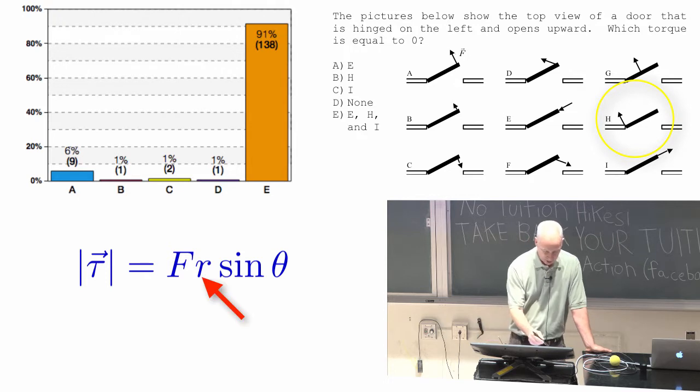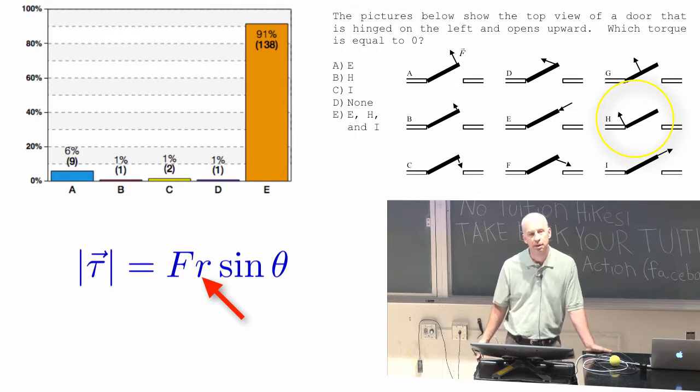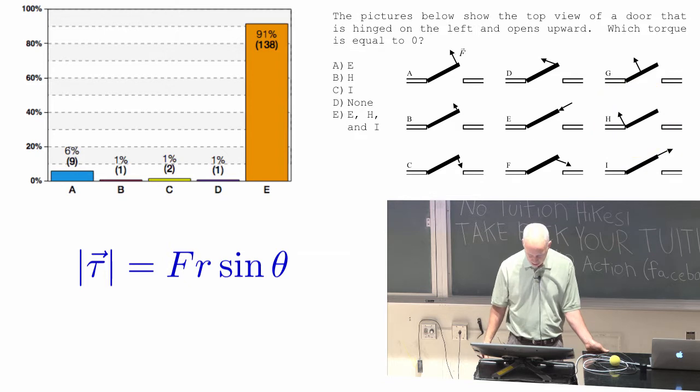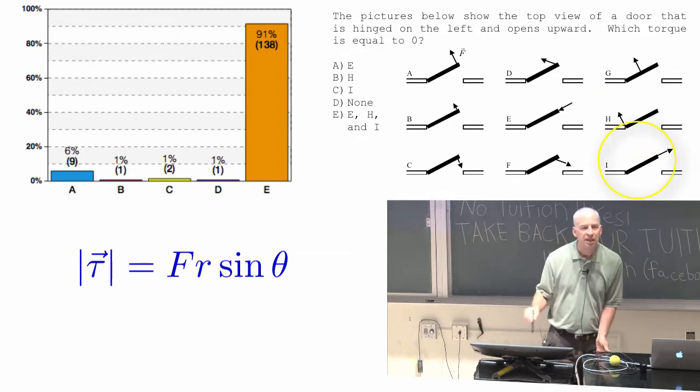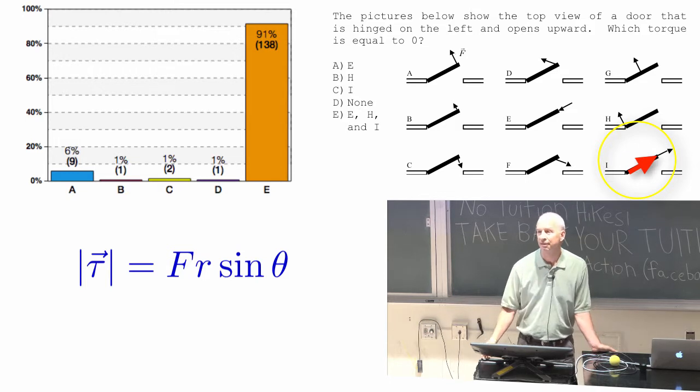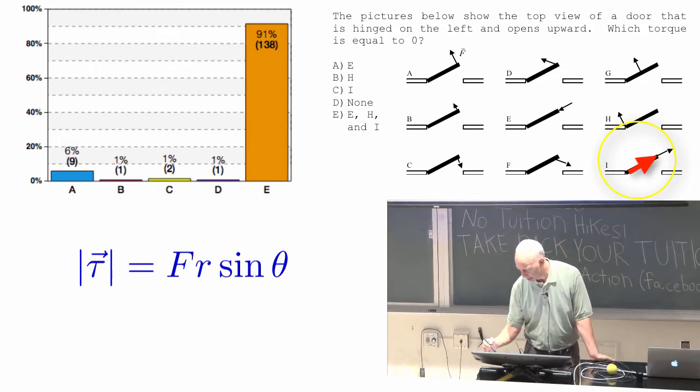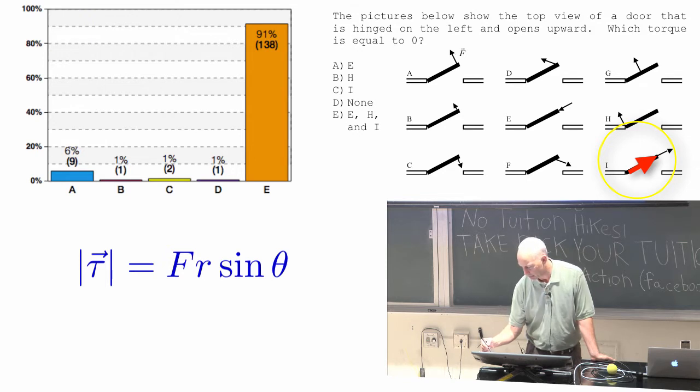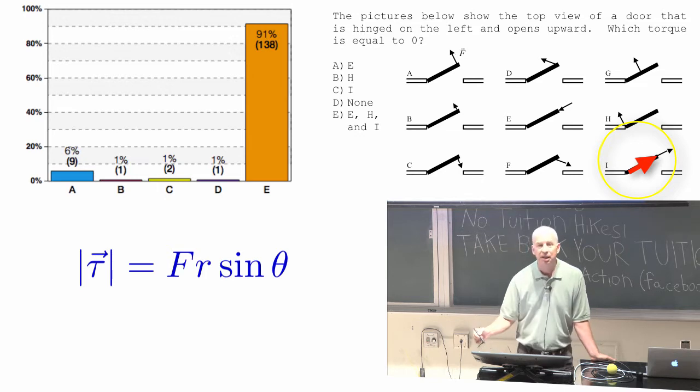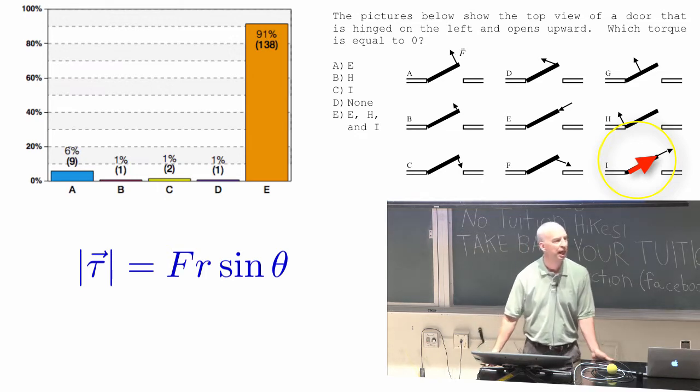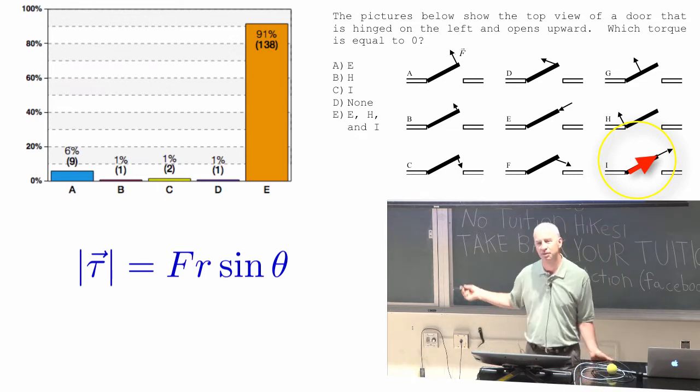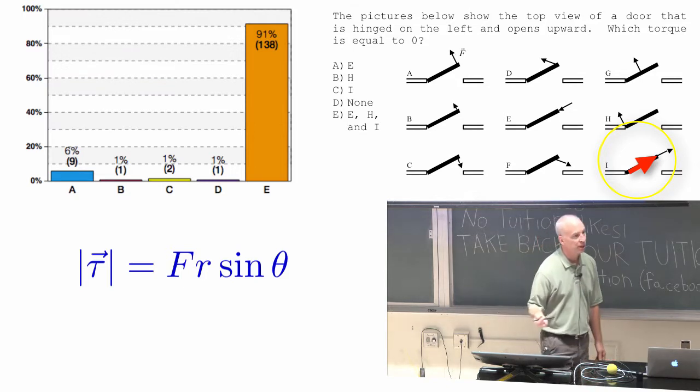H, well, R is zero for H. And what about I? I has the force in the same direction as the R vector. The R vector, again, is a vector from the axis of rotation out here to where the force is applied. So it's a vector like that. It's a vector in the same direction as the force, so the angle between them is zero and the sine of zero is zero. So that's why that torque is zero.